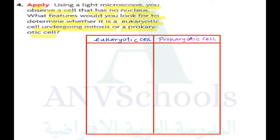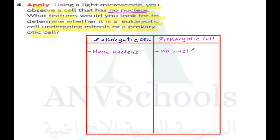The features you will look at to tell if it is eukaryotic: it should have a nucleus. But already they have told us it has no nucleus. So if you find it has no nucleus, it's already giving you a clue that this might be a prokaryotic cell.